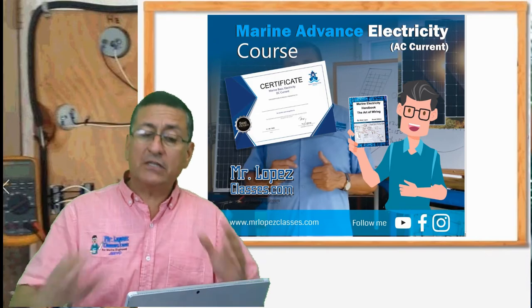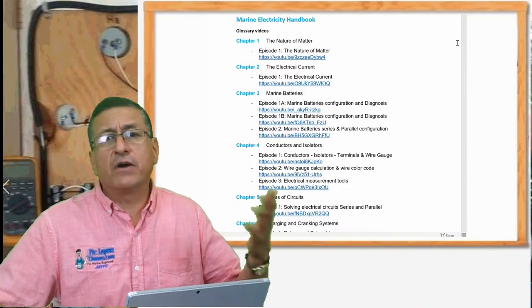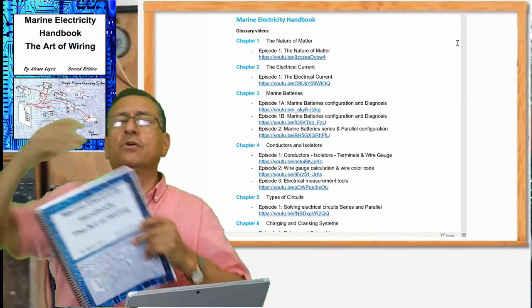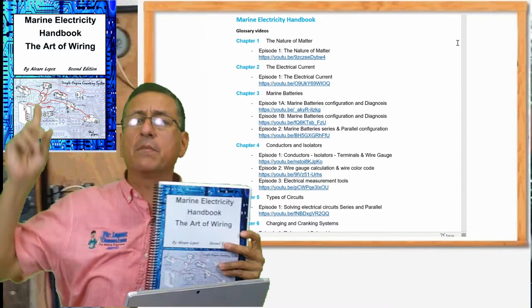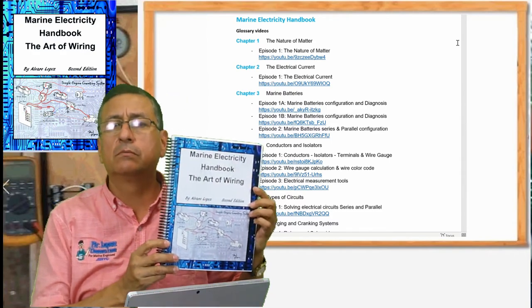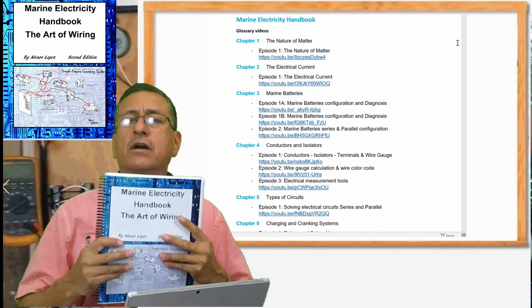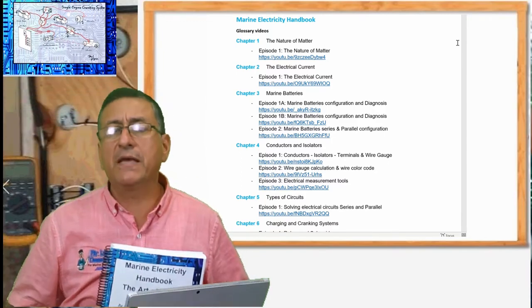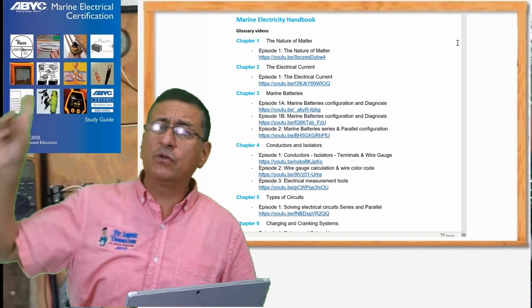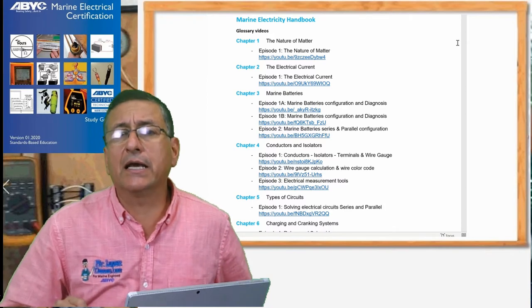In the first class, in basic electricity, we are going to cover eight chapters — the first eight chapters of this book. We are going to follow the Marine Electrical Handbook. And in this book we are going to cover both courses: basic electricity and advanced electricity.